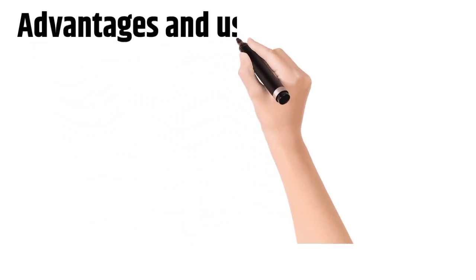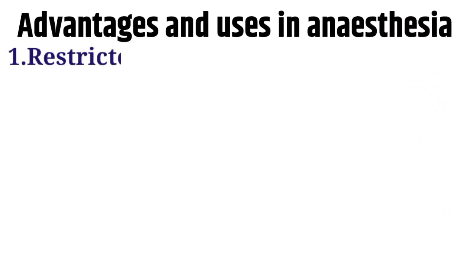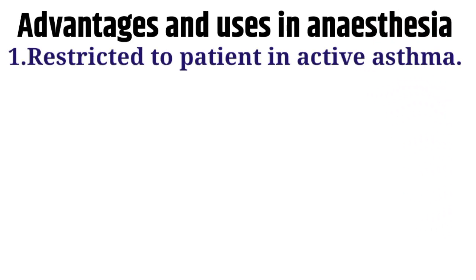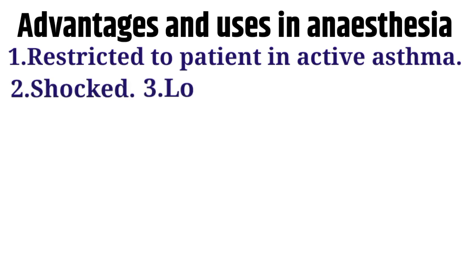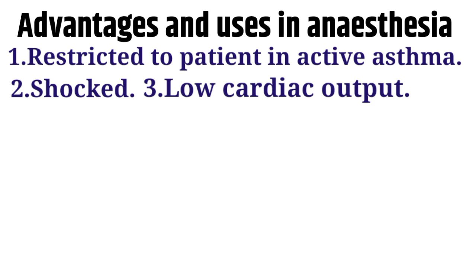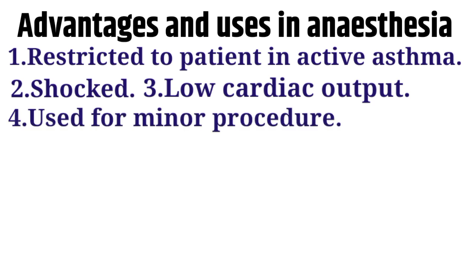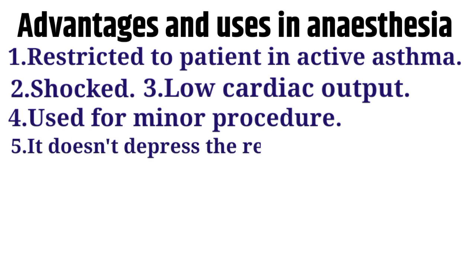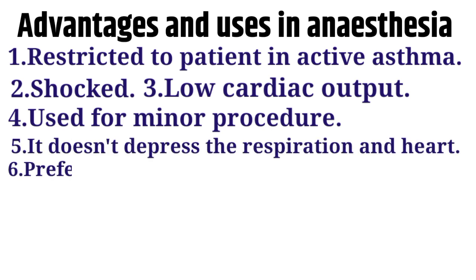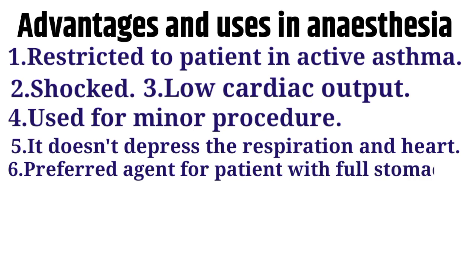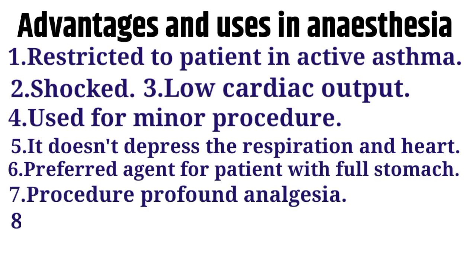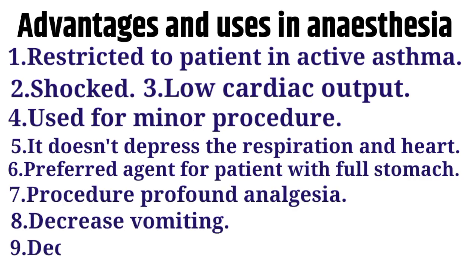Advantages and uses in anesthesia: Ketamine is used in patients with active asthma undergoing life-threatening emergency surgeries, shock, and low cardiac output, as it increases cardiac output. Used for minor procedures like incision and drainage, burn dressing. It doesn't depress respiration or the heart. Preferred agent for procedural analgesia. Decreases vomiting and bronchospasm.